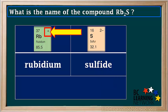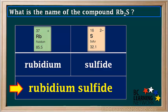At this point, we check the number of possible charges on the metal. We see that rubidium has only one possible charge, so it's monovalent. When we're dealing with a monovalent metal, we don't need to worry about roman numerals, charges, or numbers of atoms in the name. So the name of this compound is simply rubidium sulfide.